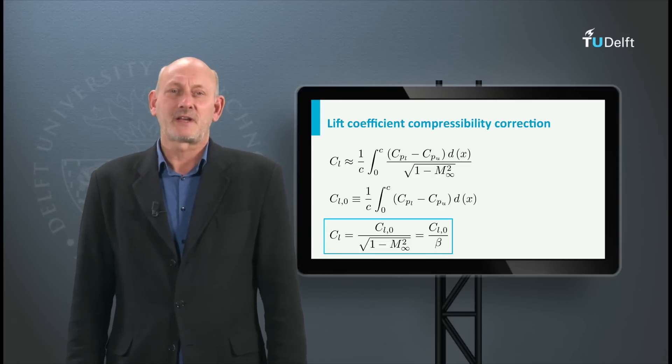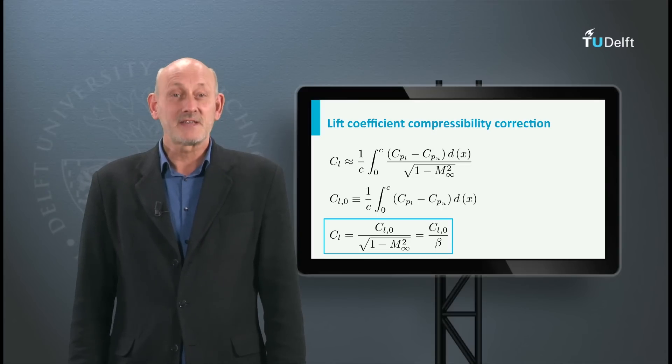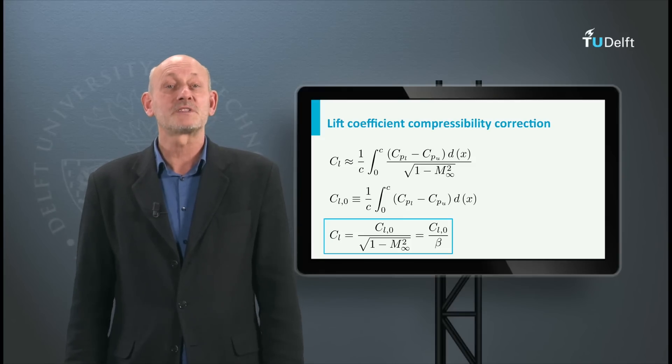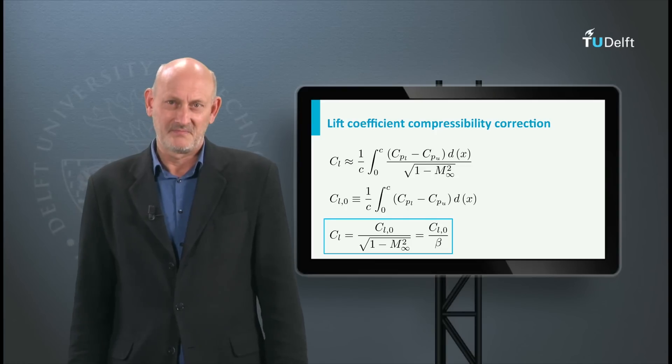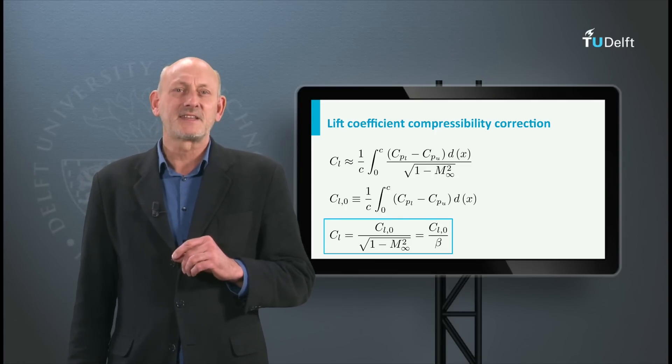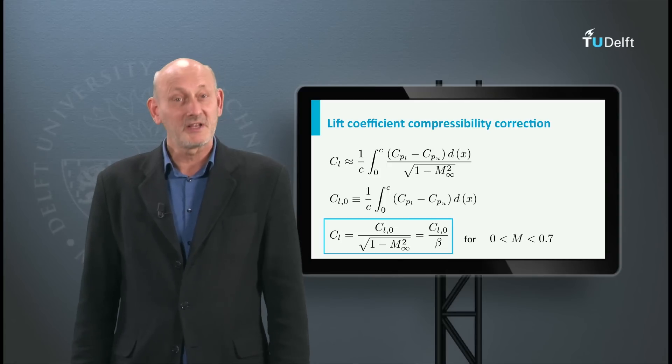It is not the only correction method there is, and it is less accurate for the higher Mach numbers, but it is a simple rule and it is valid for Mach numbers up to 0.7. The advantage of this correction rule is the fact that it can directly be applied to the lift coefficient.